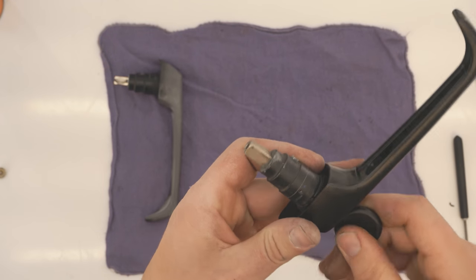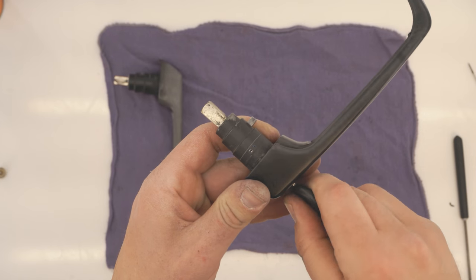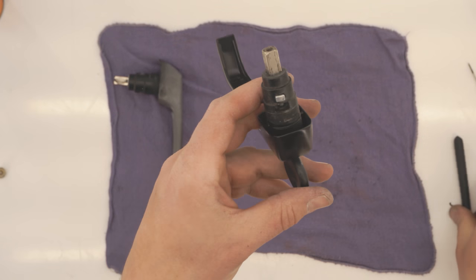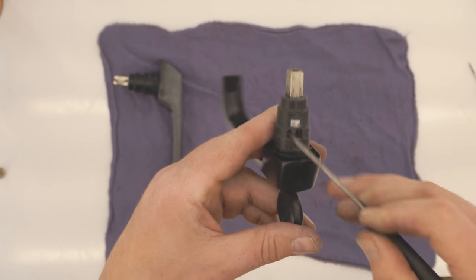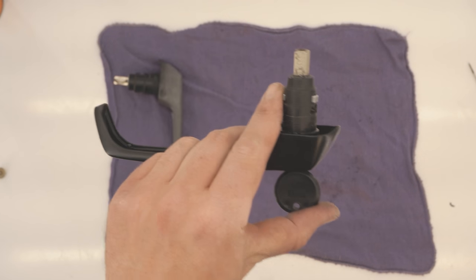Be sure to check your key for proper function before you put it back into the vehicle. Also test that the tumbler can't come out of the handle. If both of those things are good, we can go ahead and put it into the van.